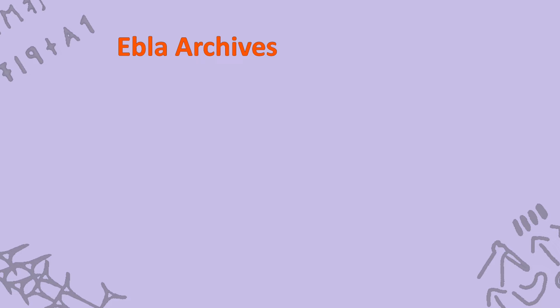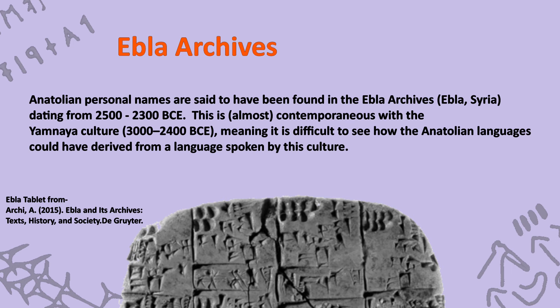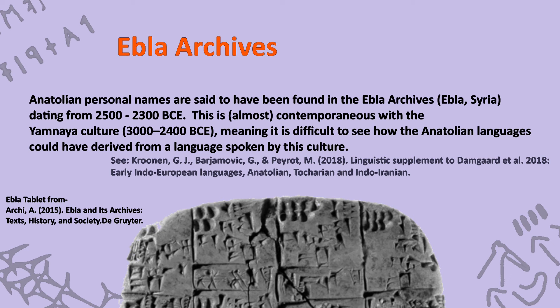Indo-Anatolian gains notable reinforcement from the recent potential identification of Anatolian personal names within the Ebla archives. This discovery, occurring significantly earlier in the historical chronicles than conventionally anticipated, challenges prevailing theories regarding the chronological dispersion of Indo-European languages.